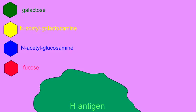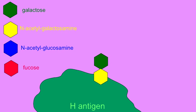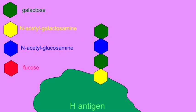Most proteins and many lipids of the cell membrane are actually glycoproteins and glycolipids, to which short oligosaccharide chains can be added. For example, there is an oligosaccharide chain which determines blood type, which can be added to proteins and even some lipids of red blood cell membranes. In this chain,